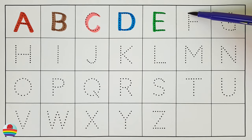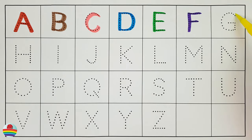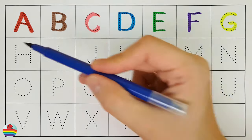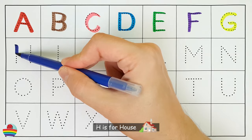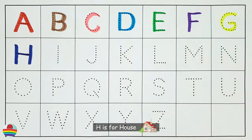F. F is for Flamingo. F. G. G is for Grape. G. H. H is for House. H.